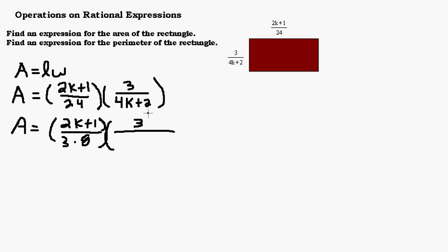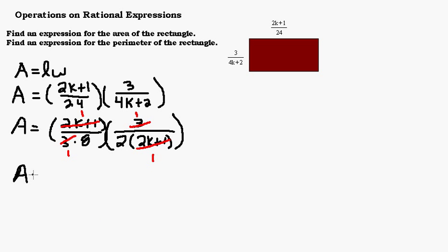Now 4k plus 2 has a common factor, which is 2. So I'm going to take a 2 out of there, which leaves me with 2 times the quantity 2k plus 1. And yes, I can cancel that 2k plus 1 with the other 2k plus 1 in the numerator of the first fraction. I can cancel this 2k plus 1 with this 2k plus 1, and I can cancel this 3 with this 3. When everything cancels out of the numerator, you have a factor of 1 left. In the denominator, we have 8 times 2, which is 16. So the expression for the area of the rectangle is 1 over 16 — all the variables dropped out.